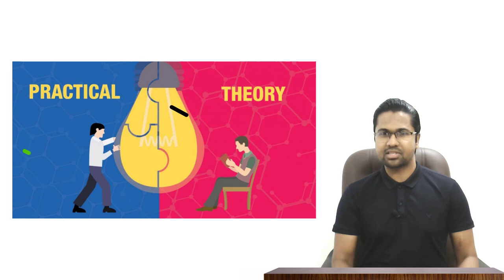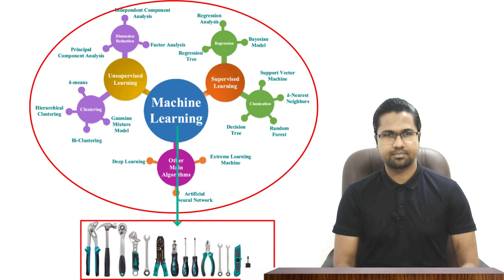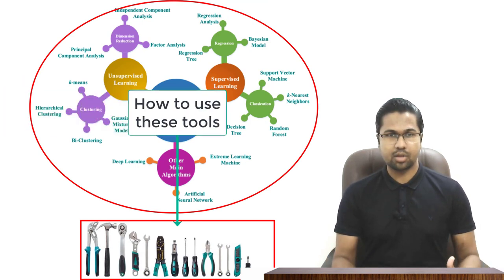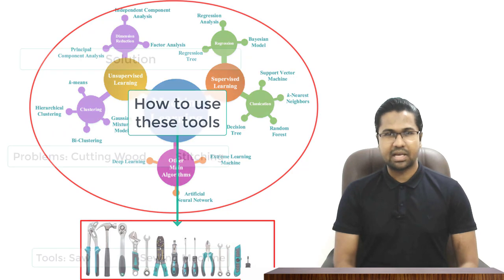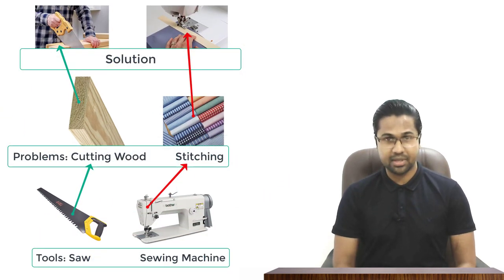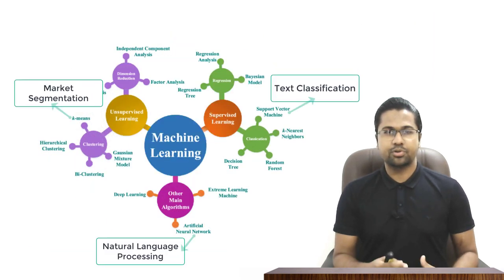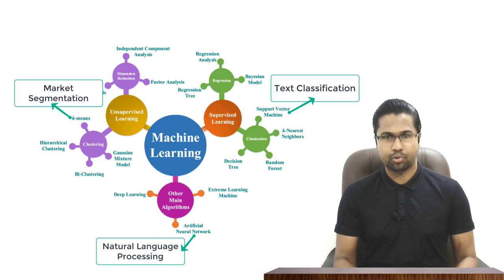Machine learning is a practical field. The algorithms are like a set of tools. We need to learn how to apply these tools to solve real-world problems. Different problems require different tools. That means you have to understand which machine learning algorithm you should use to solve a particular problem.